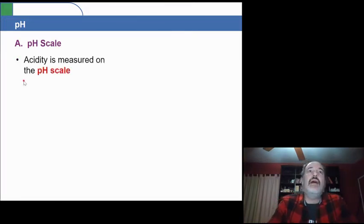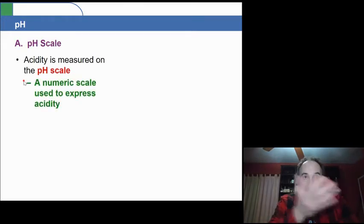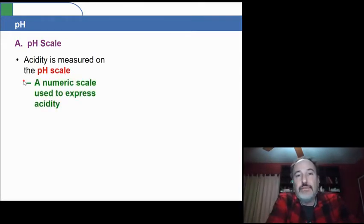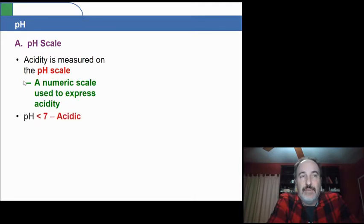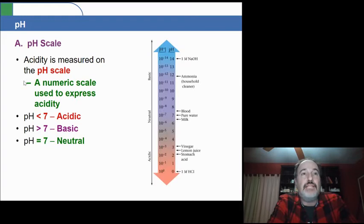It's a numeric scale used for expressing acidity. pH less than seven means that it's acidic. Greater than seven means that it's basic or alkaline. And a pH equal to seven indicates neutral.